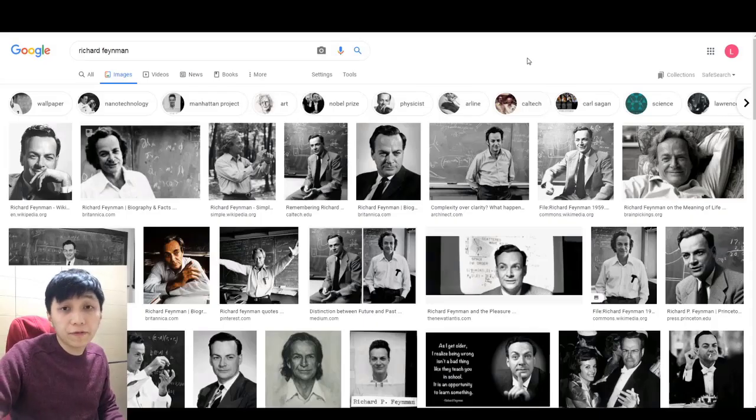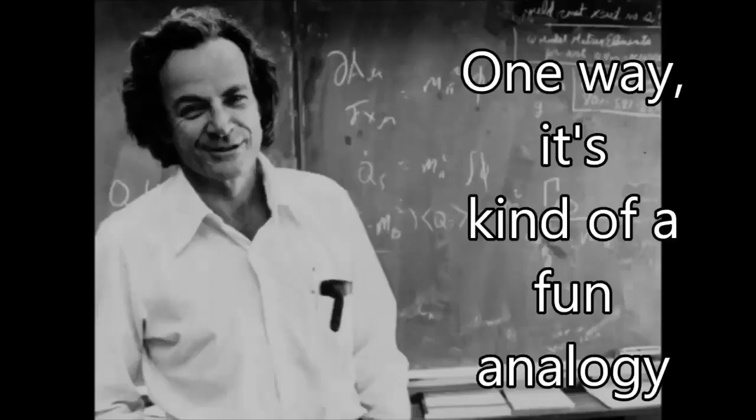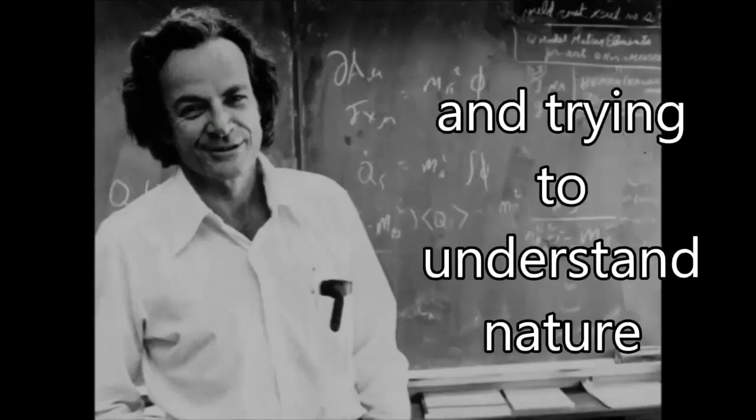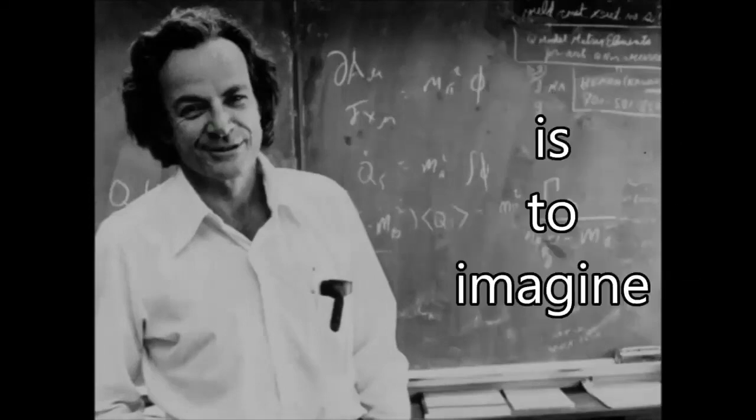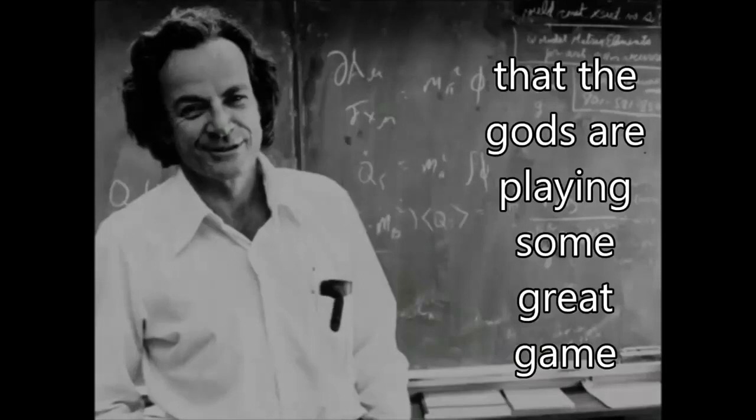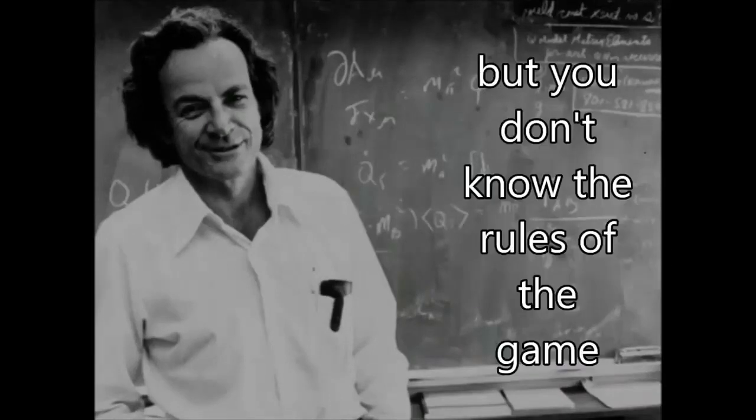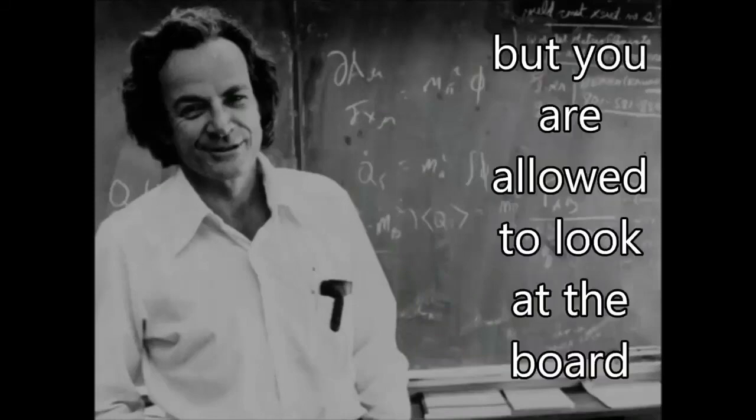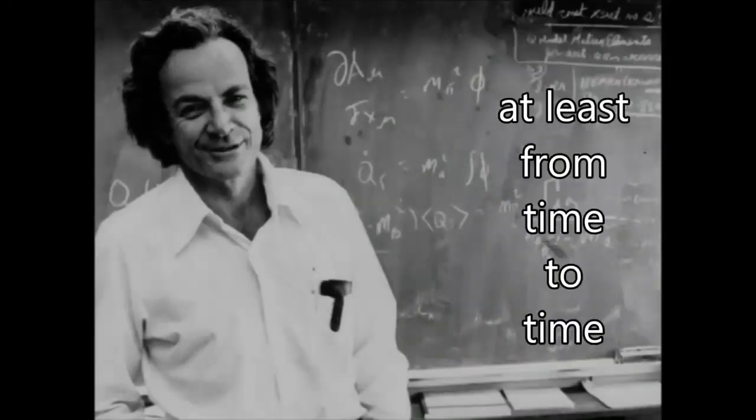The great modern physicist Richard Feynman once used chess as an analogy to science and physics. In one way, it's kind of a fun analogy to try to get some idea of what we're doing and try to understand nature. Just imagine that the gods are playing some great game like chess, and you don't know the rules of the game, but you're allowed to look at the board at least from time to time, in a little corner perhaps.